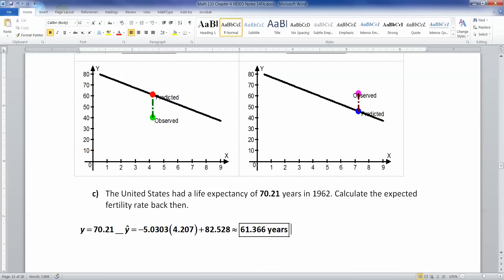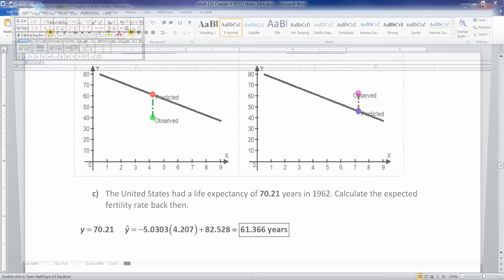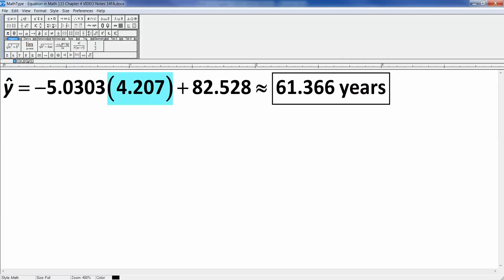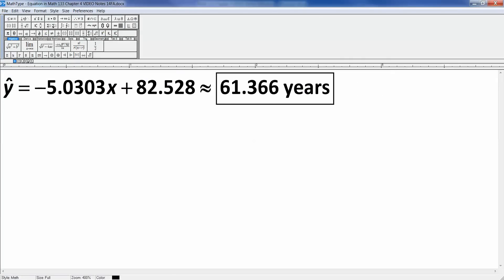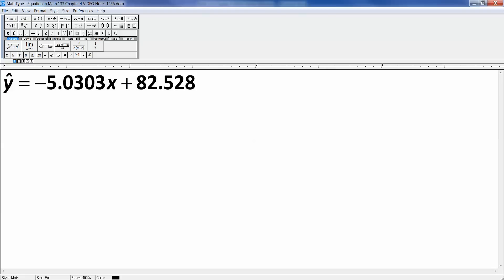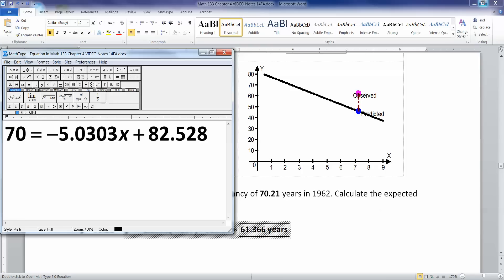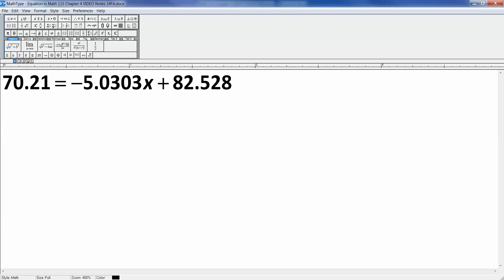We're saying, okay, we'll use our equation right here. We'll say that, okay, it's negative 5.0303x plus 82.528. And then we say that this is equal to 70.21. Okay. Well, subtract, you want to solve this for X, right? So we want to subtract 82.528 from both sides. You want to do it over on the left and the right. That way they'll cancel.